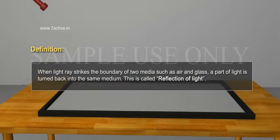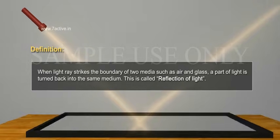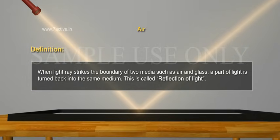Definition: When light ray strikes the boundary of two media, such as air and glass, a part of light is turned back into the same medium. This is called reflection of light.